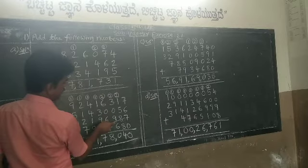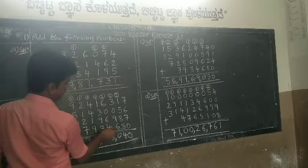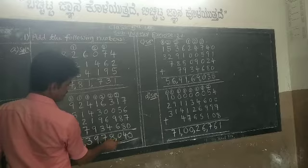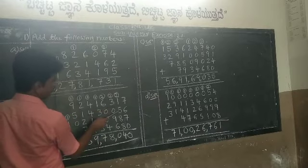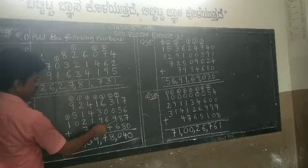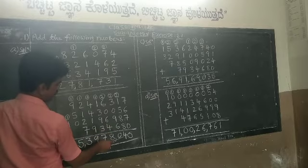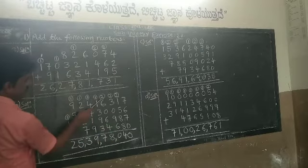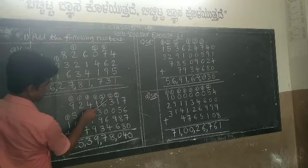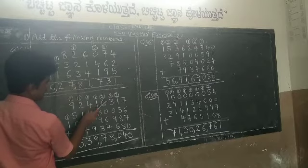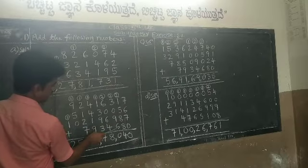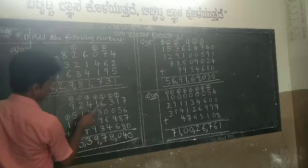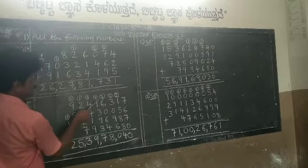Add the ones place digits: 7 plus 6 is 13, 13 plus 7 is 20, 20 plus 0 is 20. Write 0 down and carry 2. In the tens place with carry 2: 2 plus 1 is 3, 3 plus 5 is 8, 8 plus 8 is 16, 16 plus 8 is 24. Write 4 down and carry 2. In the hundreds place with carry 2: 2 plus 3 is 5, 5 plus 0 is 5, 5 plus 9 is 14, 14 plus 6 is 20. Write 0 down and carry 2.